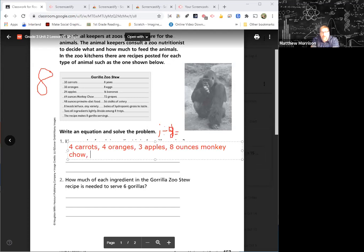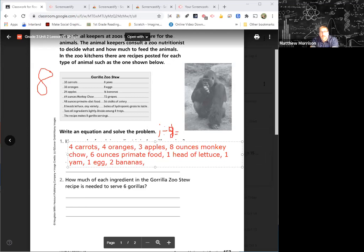How many ounces of primate food? 48 divided by eight, so six ounces primate food. Eight divided by one is one head of lettuce. And we have one yam, one egg, two bananas. 72 divided by eight—yeah, nine, good—nine grapes. 56 divided by eight is seven celery. And it doesn't tell us how many bales, it's just bales of grass. We don't have to write down every single word. This is how much one would make.